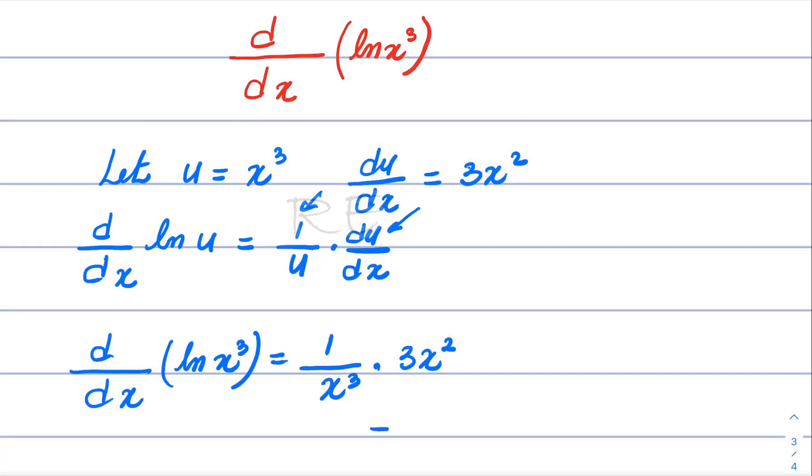We can bring everything together. It's equal to 3x² divided by x³. And x² over x³ is 1 over x. So the final answer is 3 over x.